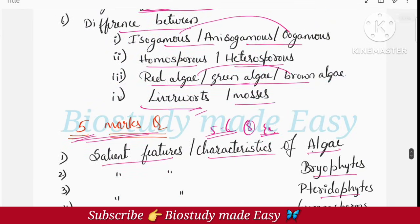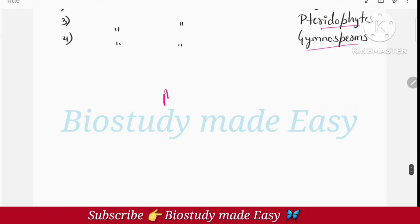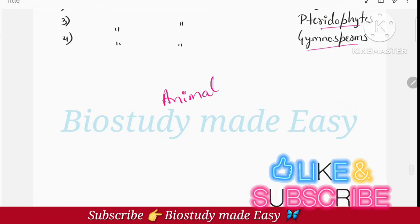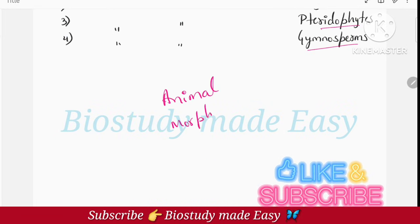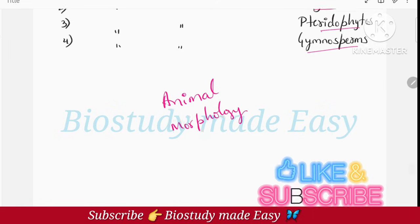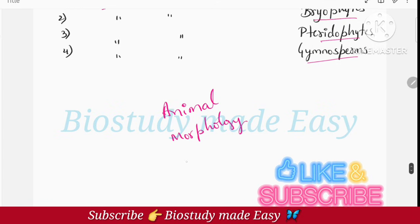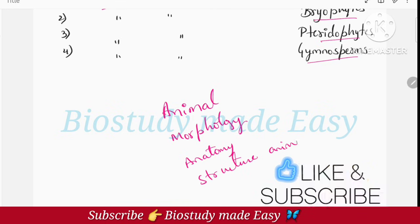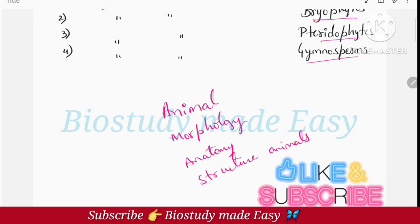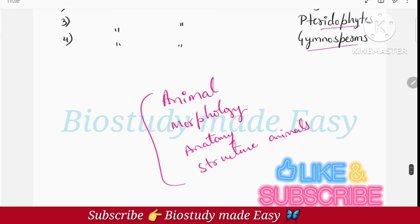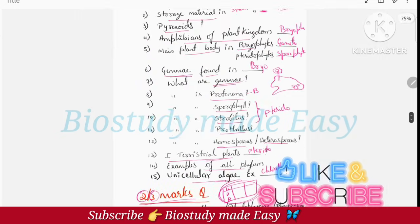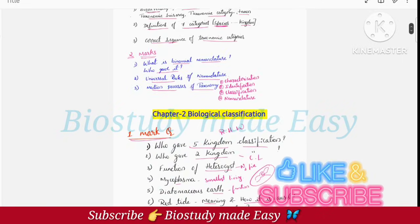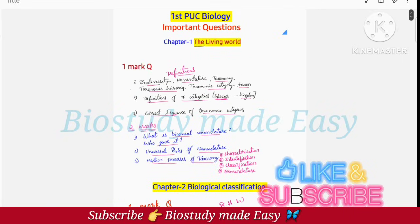So these three chapters I have told you in this video. One chapter is Animal Kingdom, and then Morphology of Flowering Plants. So this chapter, Anatomy of Flowering Plants and Structural Organization in Animals - these chapters are small. So in the next video, these chapters' important questions I will explain to you. So for now, these questions you prepare. Very soon in the next video, these chapters will be uploaded.